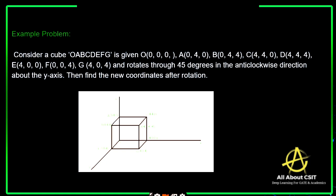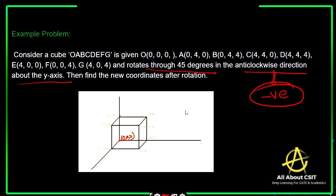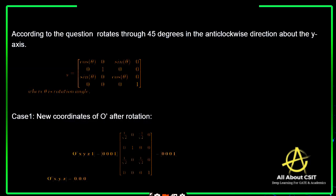Now let's see an example. Consider a cube O-A-B-C-D-E-F-G with initial coordinates: O at (0,0,0), and A, B, C, D, E, F, G at their respective coordinates. We need to find the new coordinates when the cube is rotated 45 degrees in the anti-clockwise direction about the Y-axis. Anti-clockwise means it's a positive direction.